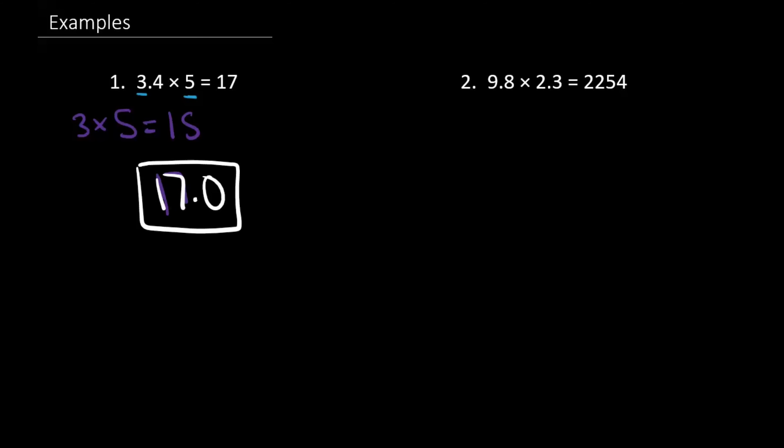So our decimal point will be after 17. Now let's do the second question: 9.8 times 2.3 equals 2,254. And we definitely know that is wrong after what we've learned. So 9 times 2 is 18, and our answer should be close to 18. And 2,254 is not close to 18.